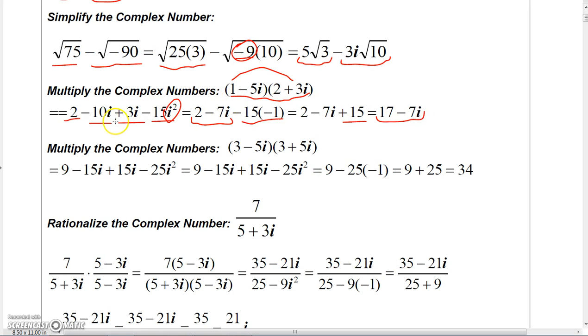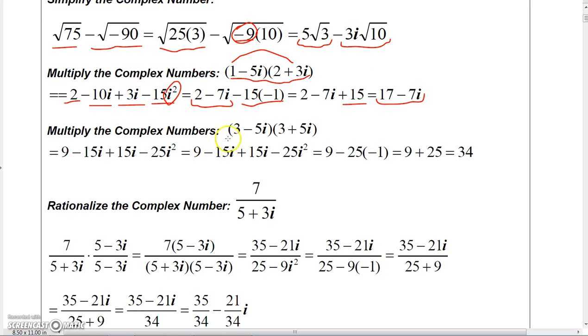Now sometimes when you multiply binomials that involve complex numbers, you get a pair of conjugates. Conjugates have a unique character about them in that when you multiply them, the middle terms cancel.